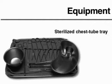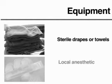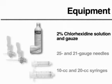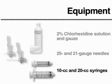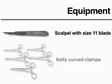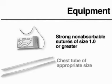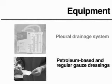Sterilized and fully prepared chest tube trays are often available in the hospital. The key materials required in addition are a sterile gown, mask, and gloves, sterile drapes or towels, local anesthetics such as 1% lidocaine, chlorhexidine cleaning solution and sterile pieces of gauze, 25 and 21 gauge needles, 10 cc and 20 cc syringes, a scalpel with size 11 blade, at least 4 or 5 dissecting instruments such as Kelly-curved clamps or artery forceps, non-absorbable strong sutures of size 1.0 or greater made of silk or nylon, a chest tube of appropriate size, a sterile drainage system, and dressings for the tube after insertion.